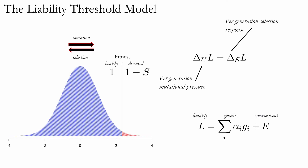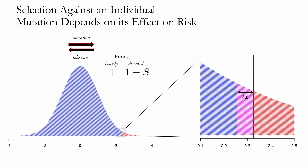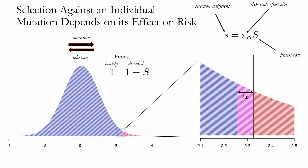In order to understand the genetic architecture of disease under this model, we need to understand the selection coefficients of individual alleles. Consider a mutation of effect size alpha that pushes an additional subset of the population across the threshold, corresponding to the purple area under the curve. This area gives the difference in the probability of developing the disease between carriers of the two different alleles — I'll refer to this as the risk-scale effect size. The selection coefficient an allele experiences is given by multiplying the effect size on this scale times the fitness cost of the disease.